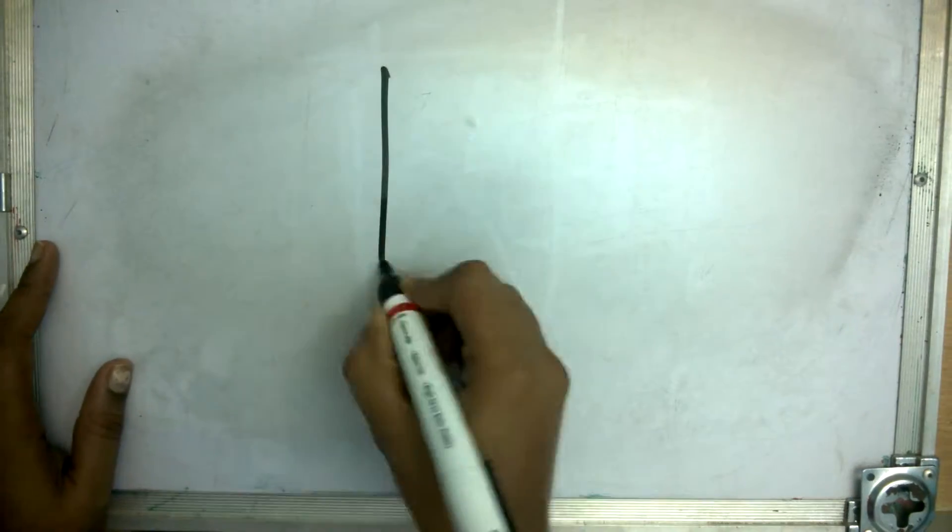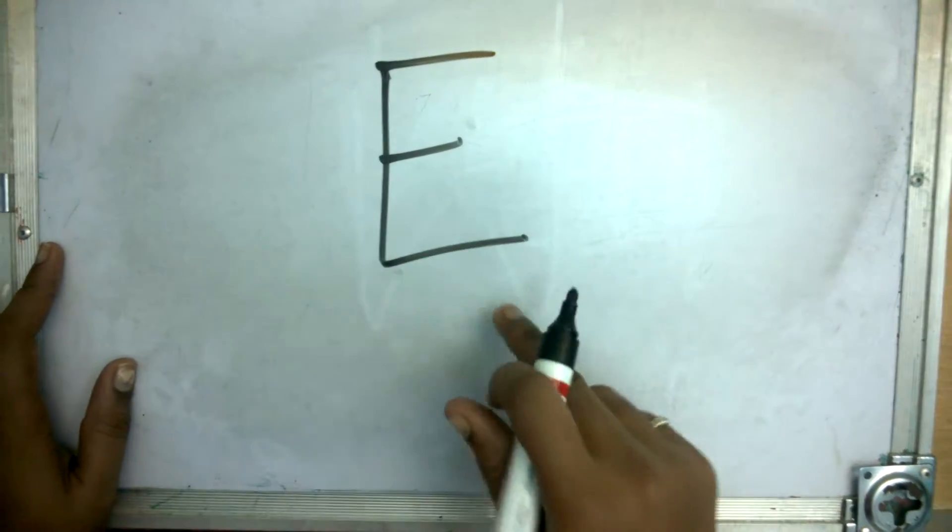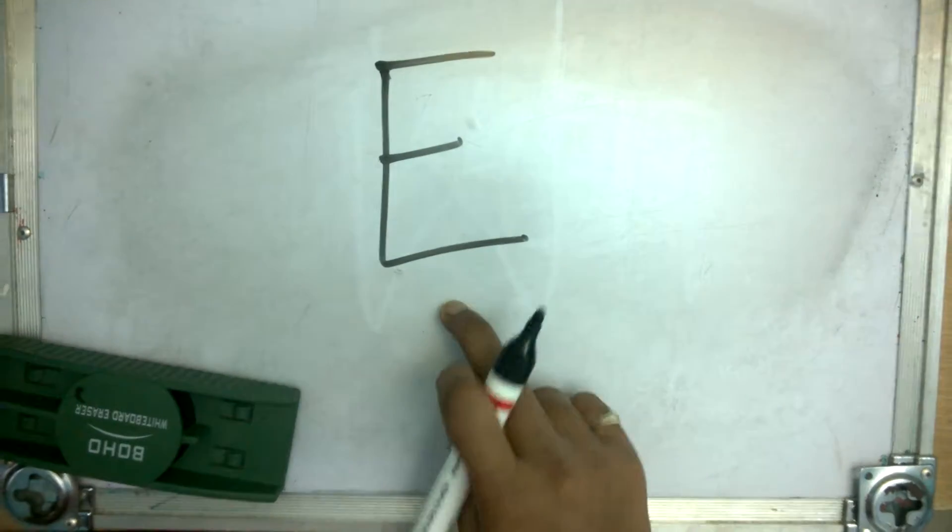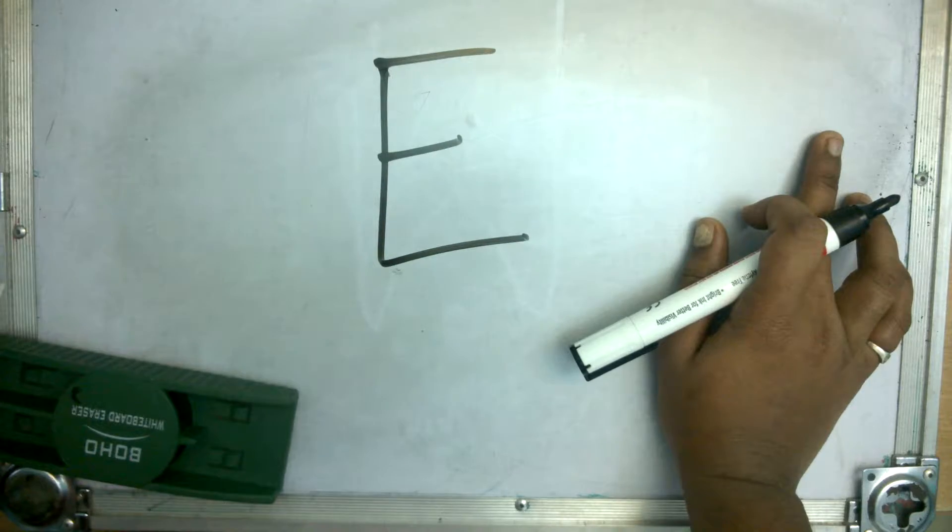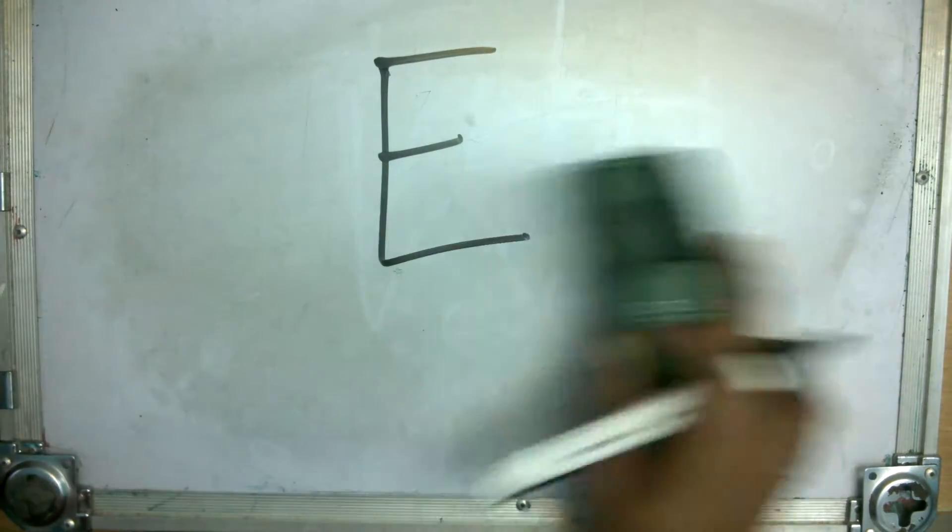Today we are going to see the letter E with sound and some of the words that start with E. E sounds A, egg, A. Let's see some of the words then we will understand.